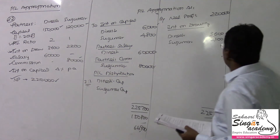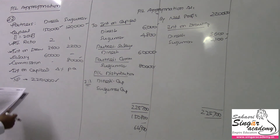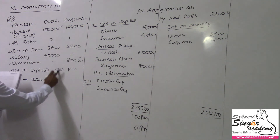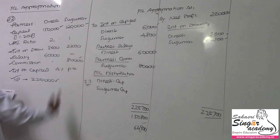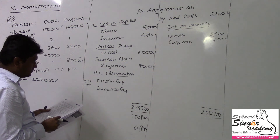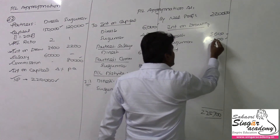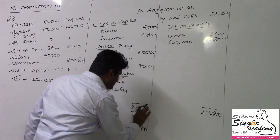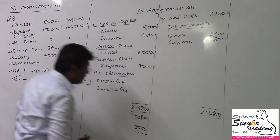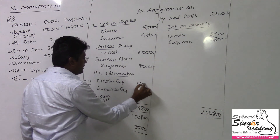Checking: interest on drawings 3,600 and 2,100 — that's okay. Net profit 2 lakhs 20,000. Salary 60,000 and 40 gives 1 lakh 40. Interest on capital 6,000 and 4,800 — correct. Debit total 1 lakh 50,800 — correct. Balance comes to 75,000. Dinesh and Sugumar share in ratio 2:1, so Dinesh gets 50,000 and Sugumar gets 25,000.